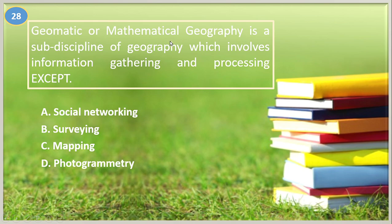Number twenty-eight. Geomatic or mathematical geography is a sub-discipline of geography which involves information gathering and processing — EXCEPT: A. Social networking, B. Surveying, C. Mapping, D. Photogrammetry. The answer is letter A, social networking. Geomatic is the discipline of gathering, storing, processing, and delivering spatially referenced information. Social networking is not part of geomatic or mathematical geography.